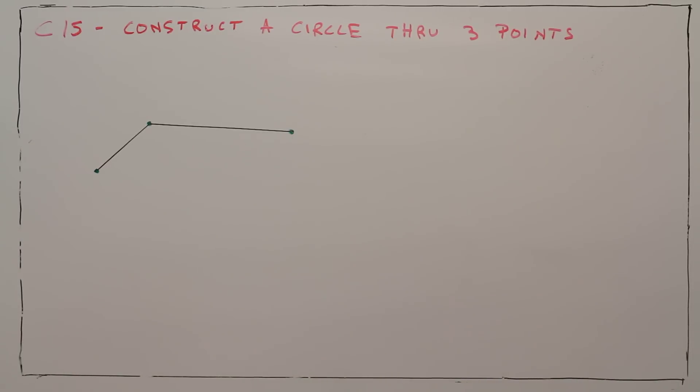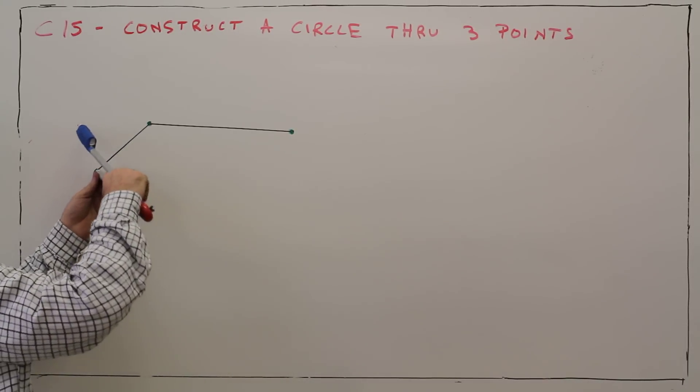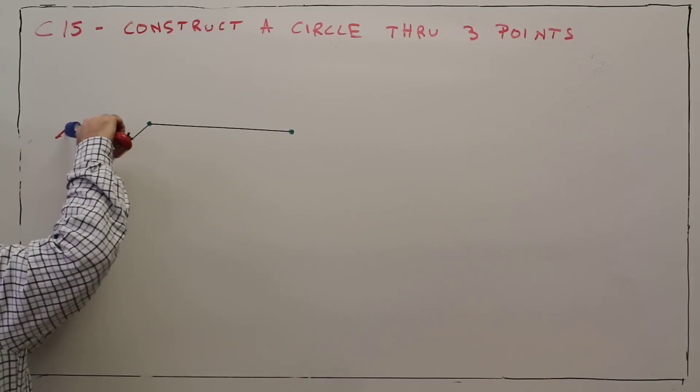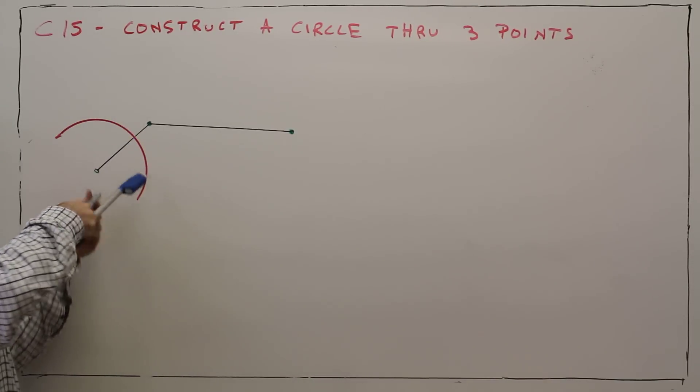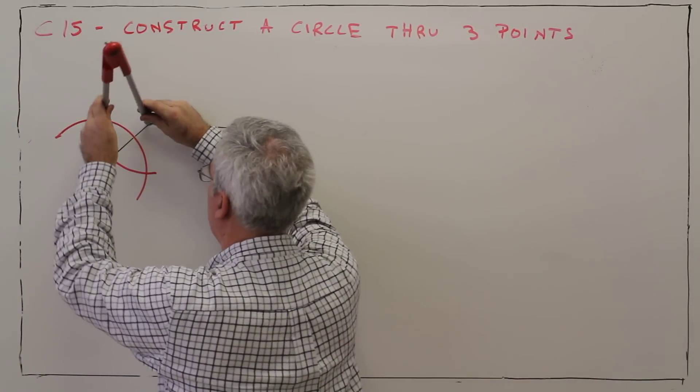Constructing the perpendicular bisector. Again, doing the fishy thing. More than halfway open. Again, I can do the arc like such. The arc like such.